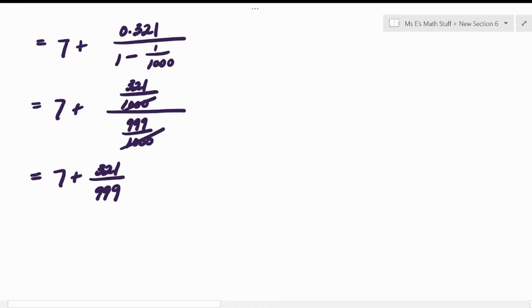321 and 999 I know are both divisible by three just because you could add digits and check and all that. So let's cancel stuff down. 321 would be 107 after you canceled three.